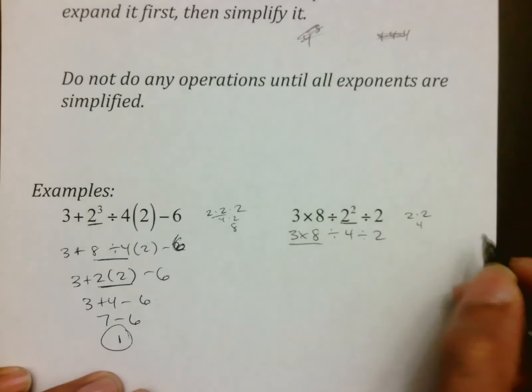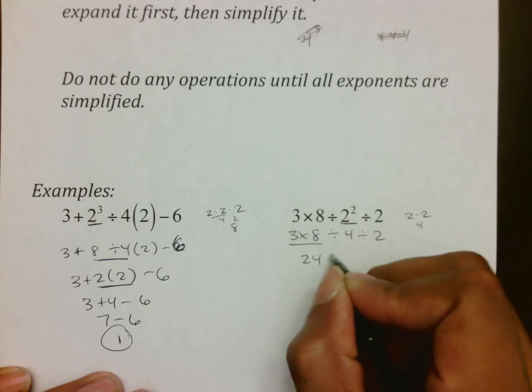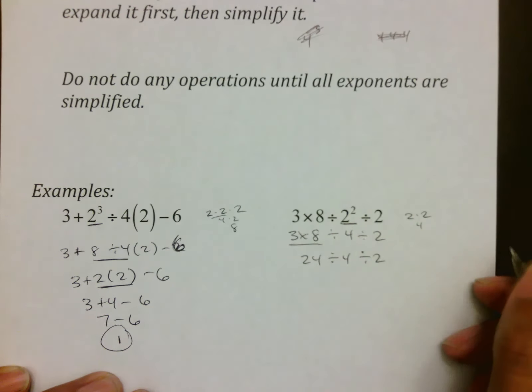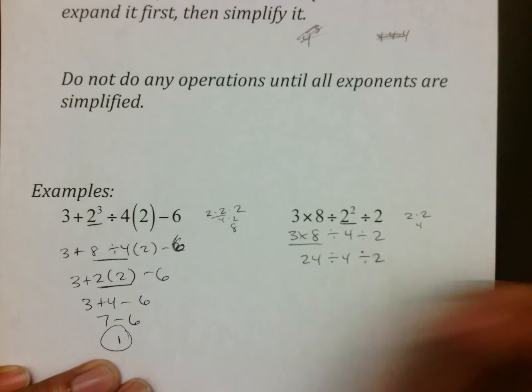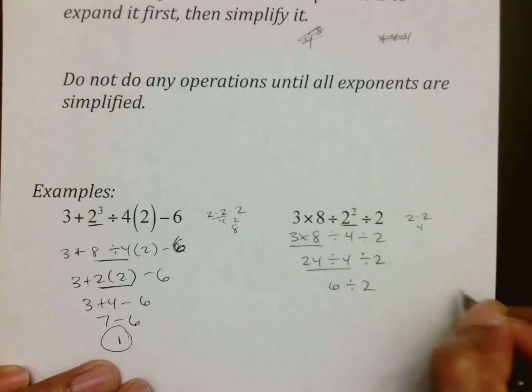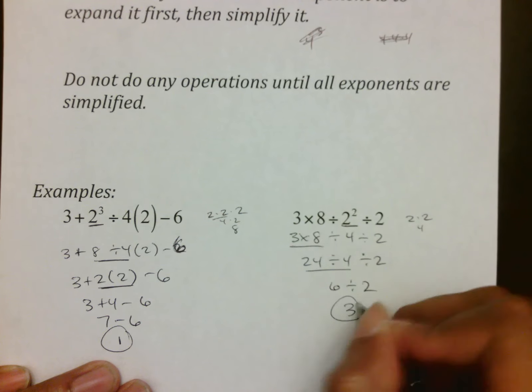VIP, first one in line is 3 × 8, which is 24 ÷ 4 ÷ 2, which is 6 ÷ 2, and 6 ÷ 2 is 3.